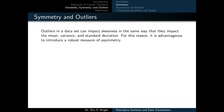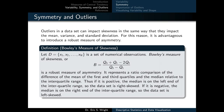Outliers can impact skewness in the same way they impact the mean, variance, and standard deviation. For this reason, it is advantageous to introduce a robust measure of asymmetry, just as we introduced the interquartile range as a robust measure of variability. One robust measure is Bowley's measure of skewness. If d equals x1 through xn is a set of numerical observations, Bowley's measure b is a ratio comparing the difference of the first and third quartiles and the median relative to the interquartile range. If b is positive, the median is on the left side of the interquartile range and the dataset is right-skewed. If b is negative, the median is on the right side and the data is left-skewed.